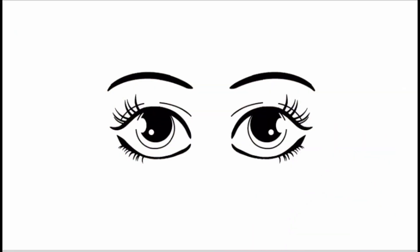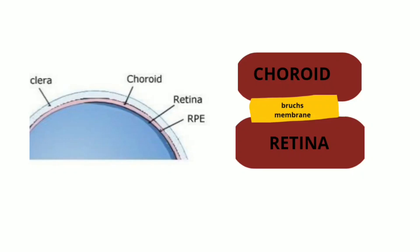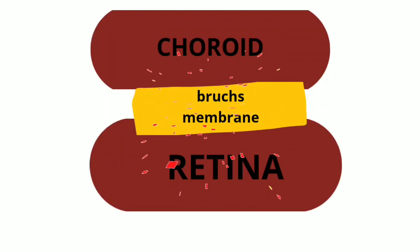The second important organ is the eyes. Bruch's membrane of the eye is affected and calcified. In the eye, between the retina and choroid, there is a membrane made up of the basement membrane of the retina, the basement membrane of the choroid, as well as some supporting material — this membrane is called Bruch's membrane. The classic eye finding is angioid streaks, which represent breaks in Bruch's membrane.